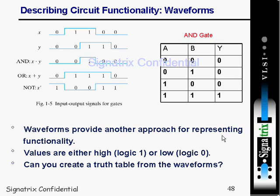Waveforms provide another approach for representing circuit functionality. You can explain the behavior of any gate using waveforms — it is one more way to show the functionality of a gate. Values are either high or low. You can also create a truth table from a waveform. In big projects, by examining waveforms against a specification, you can derive and debug circuit functionality.